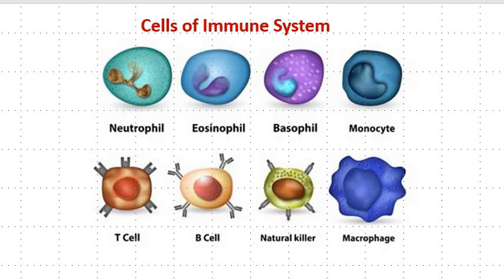Eosinophils are recruited from the blood into the tissues at the site of inflammation. They are a specialized type of immune cell involved in antiparasitic and inflammatory responses. High levels of eosinophils signal that there may be a parasitic infection in the cells.